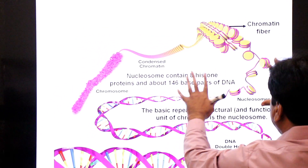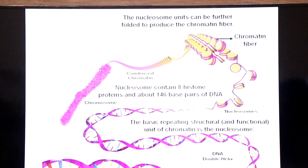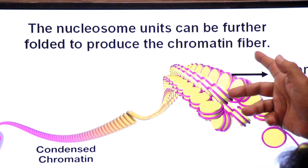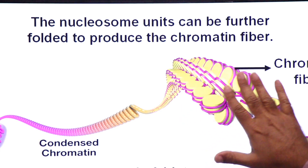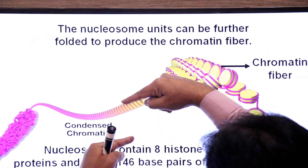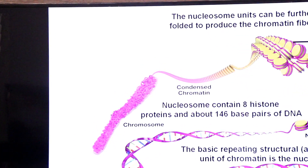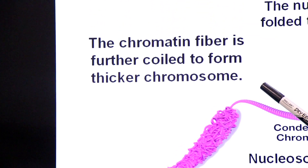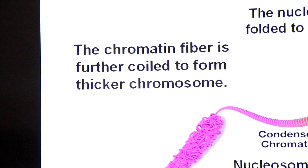Nucleosome units can be further folded and further condensed to produce chromatin fiber. The chromatin fiber is further coiled and condensed to form the thicker chromosome.